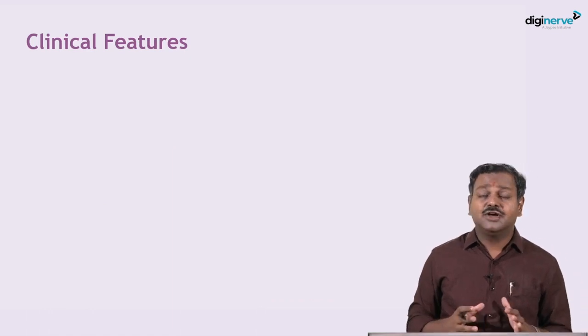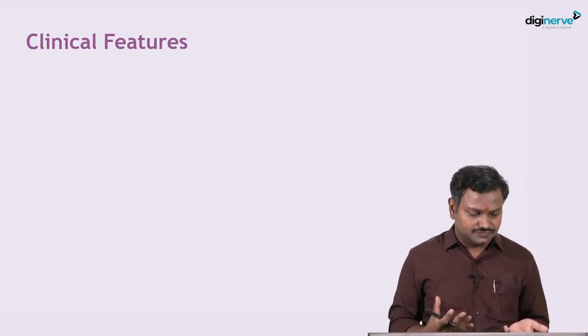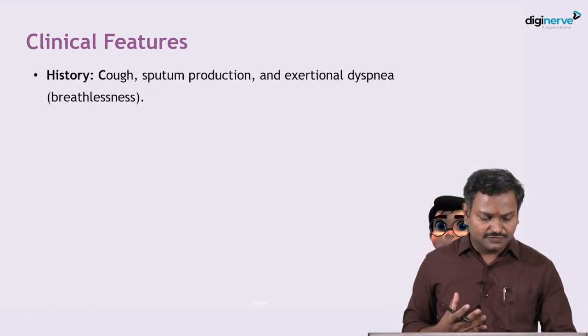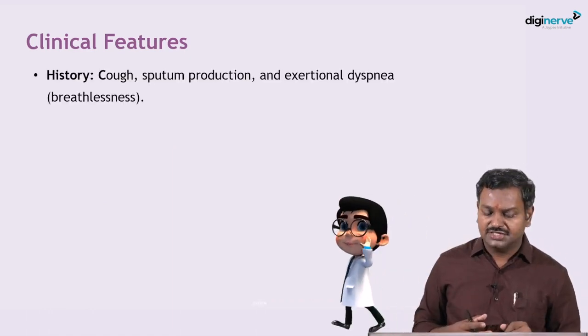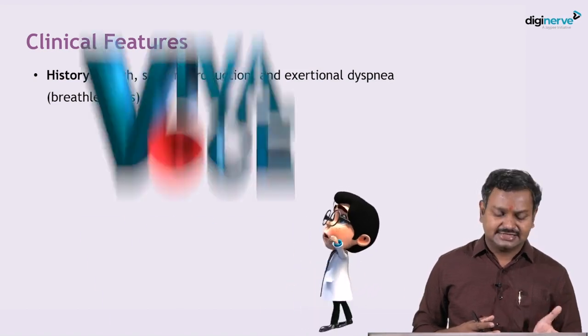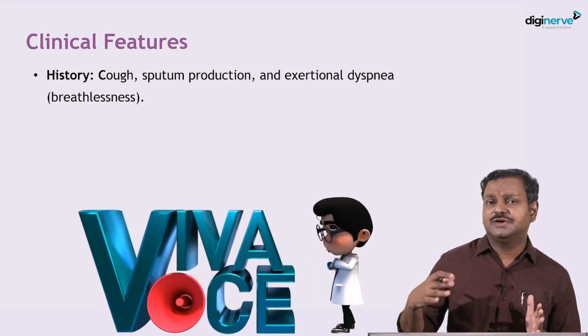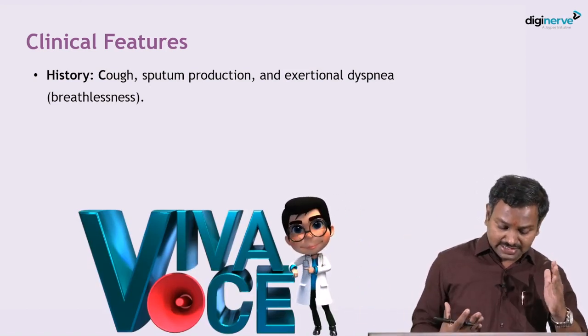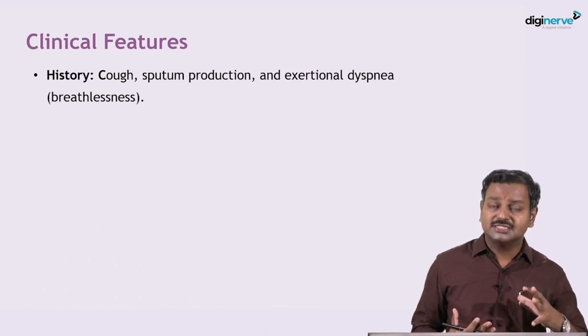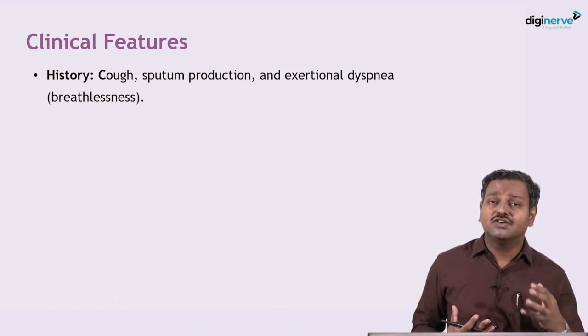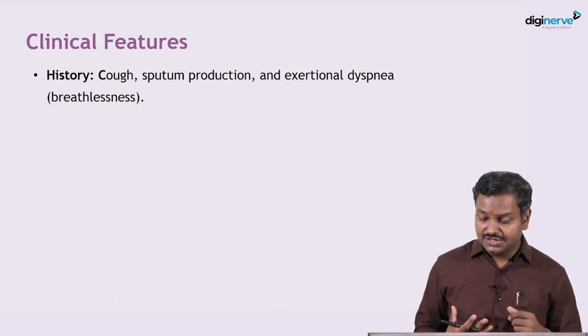Chronic bronchitis predominantly presents with cough — cough with expectoration and exertional dyspnea. Remember, emphysema is predominantly dyspnea, whereas in chronic bronchitis it is predominantly cough with expectoration.